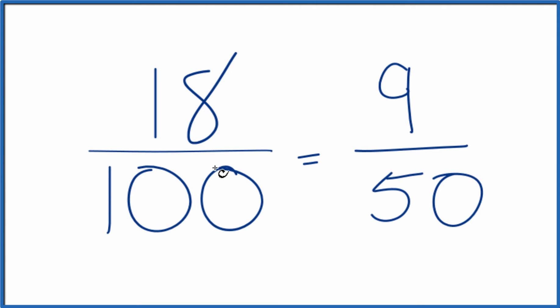So in answer to our question, 18 one-hundredths, when we simplify that to lowest terms, that's going to be 9 fiftieths.